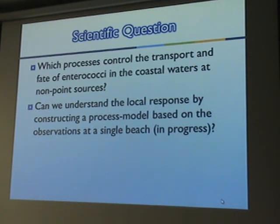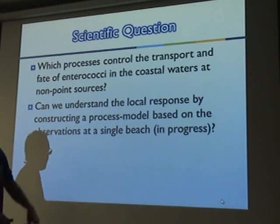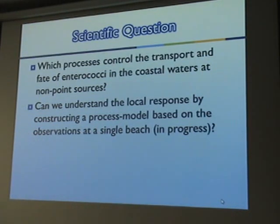What we'd like to do is understand what makes these beaches have bad water quality. Can we construct a model that predicts what's happening at a beach based on the processes? If we have a process-based model, then ideally you can apply that model to different locations or at least figure out what it represents. I say it's in progress because it's not done.